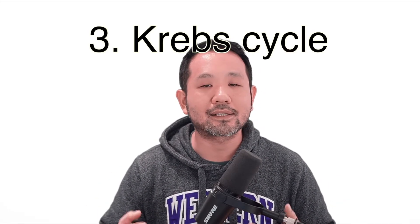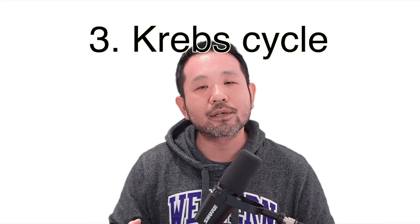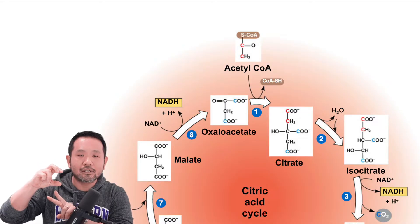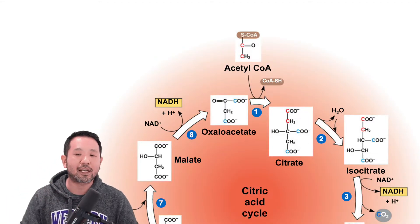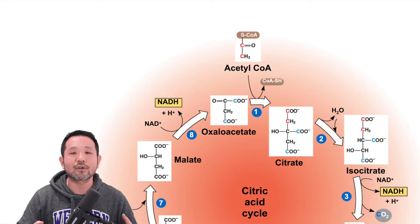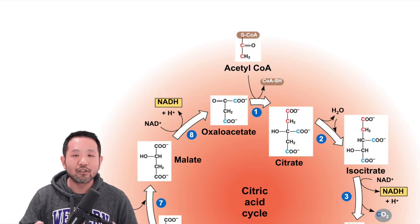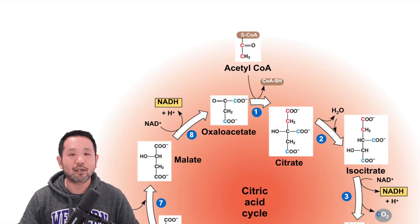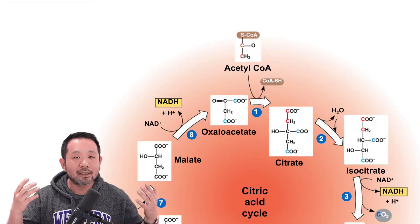Now that we have acetyl-CoA, this is when we introduce the Krebs cycle, also known as the citric acid cycle. As acetyl-CoA drops off the two original carbon substrates attached to the coenzyme A, it drops them off into the citric acid cycle, allowing that two-carbon substrate to engage with oxaloacetate, which is a four-carbon acid. The new six-carbon acid that forms as a result of four plus two is going to be called citrate or citric acid, from which we also get the name citric acid cycle.